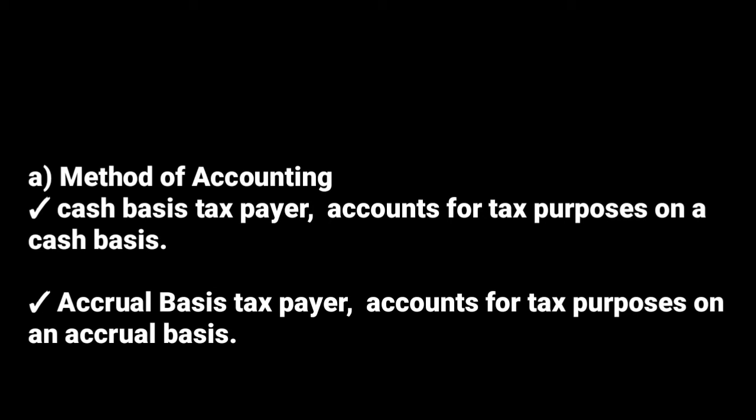Under the accrual basis, even when they sell on credit, they consider it as income — even when it is only receivable, without actually receiving the money. If they stay in a house without paying the rent for that particular month, they already consider it as an expenditure, which is not the same as with the cash basis taxpayer.